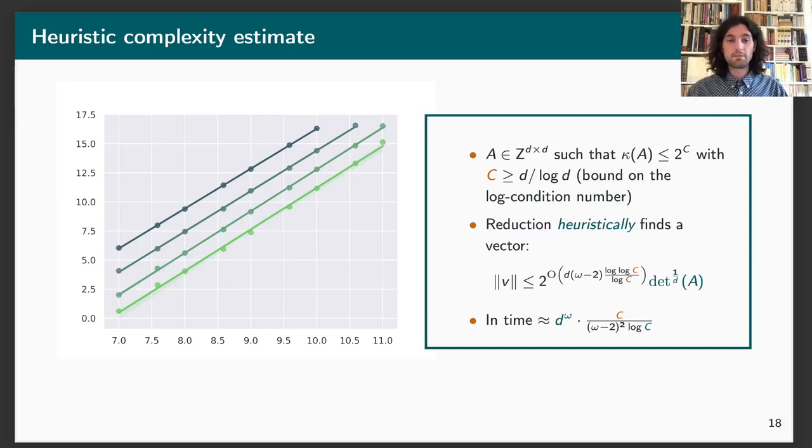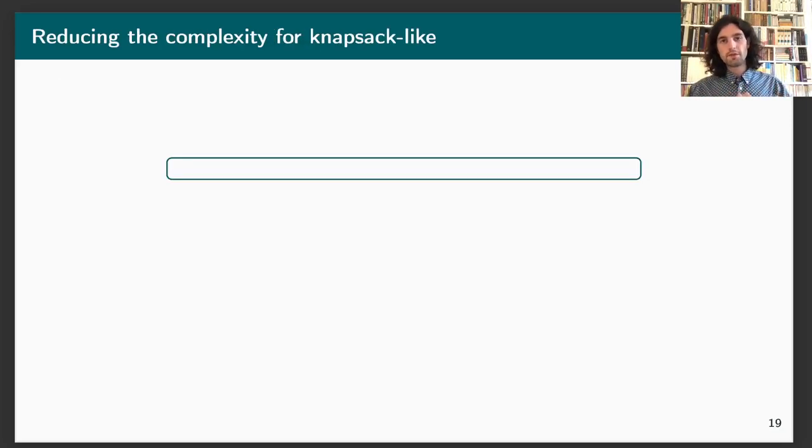But we made a lot of experiments. And in particular, here you have on the left some traces of execution. So the abscissa is the log of the dimension of the lattice we're considering from 2 to the 7 to 2 to the 11. And in ordinates, you get the log of the running time in seconds. We also increased linearly the condition number of the matrix we're considering. And we see that all the slopes of these graphs are almost all equal and around 2.7, which was the exponent we use for matrix multiplication. So just before moving on to other experiments and results, I'd just like to point out that we can reduce this D^omega dependency for knapsack-like lattices.